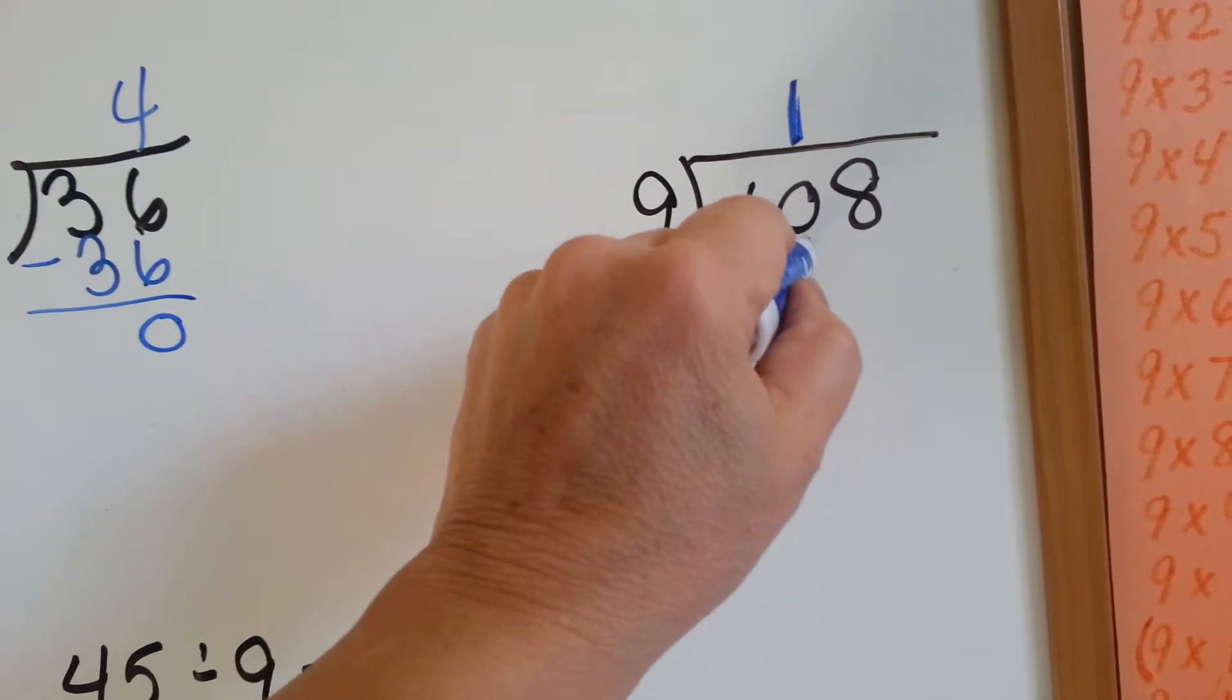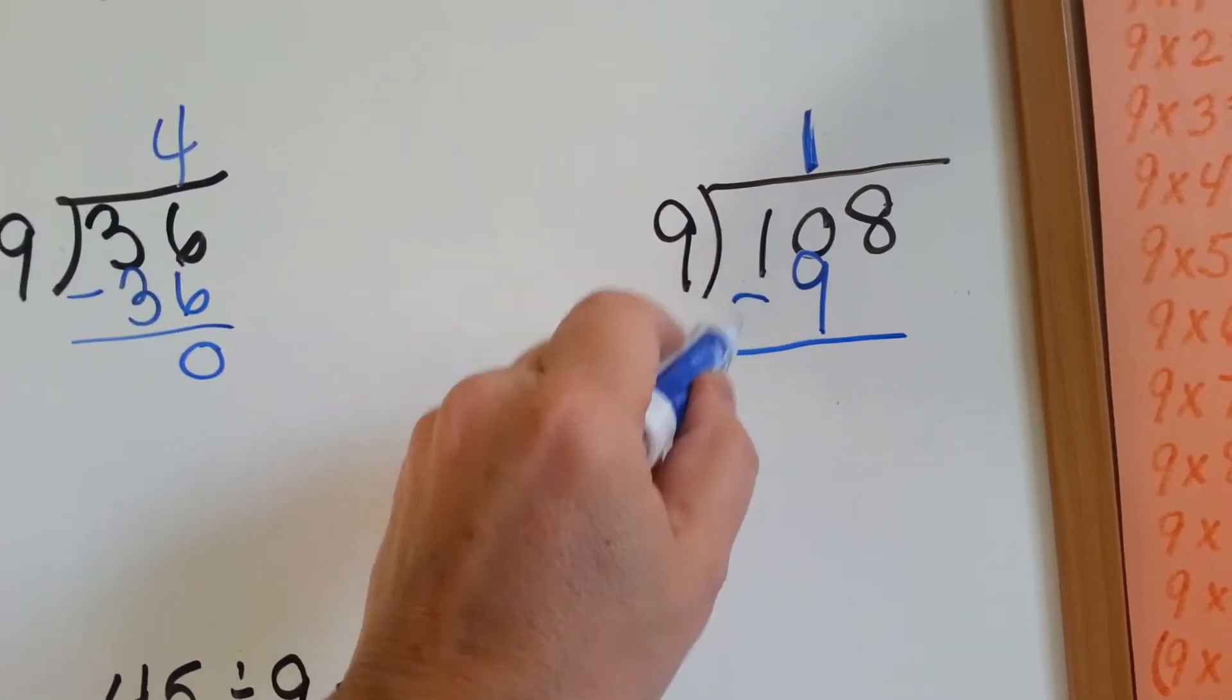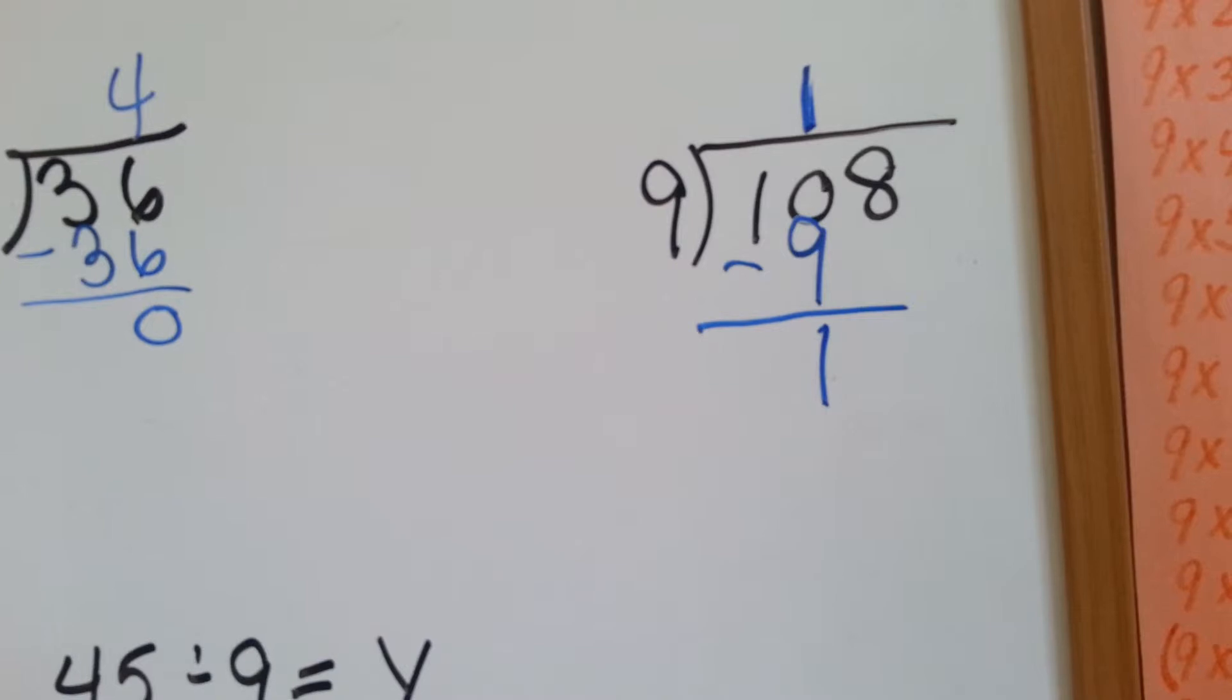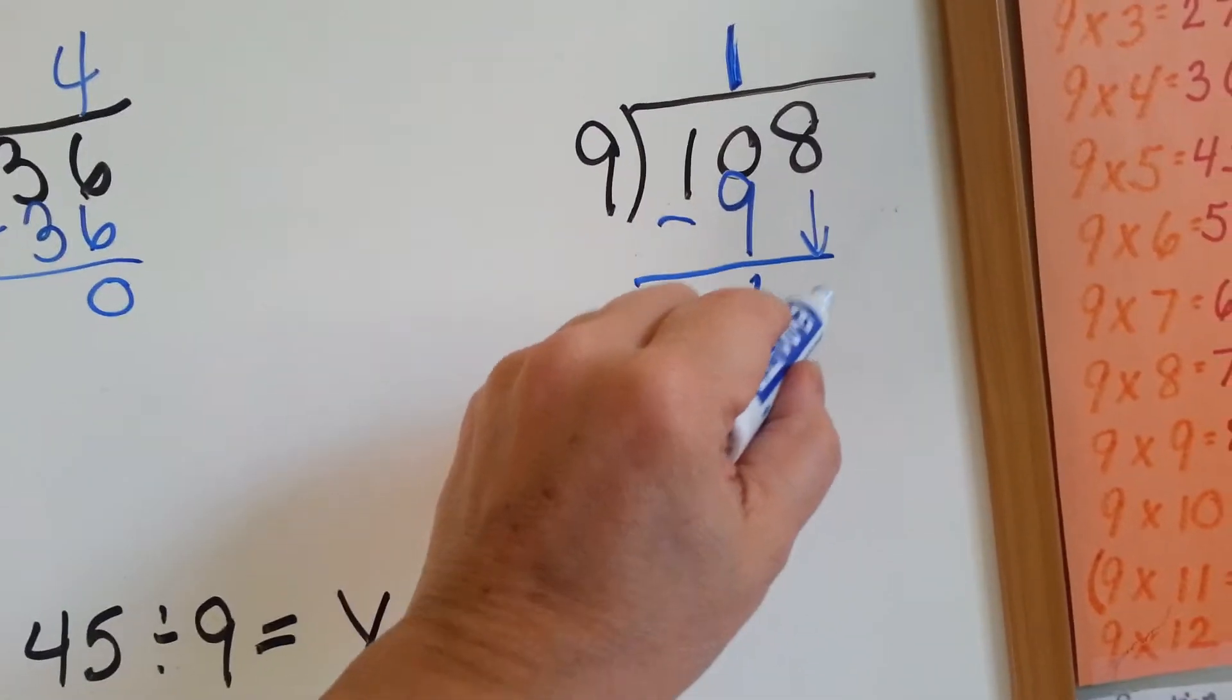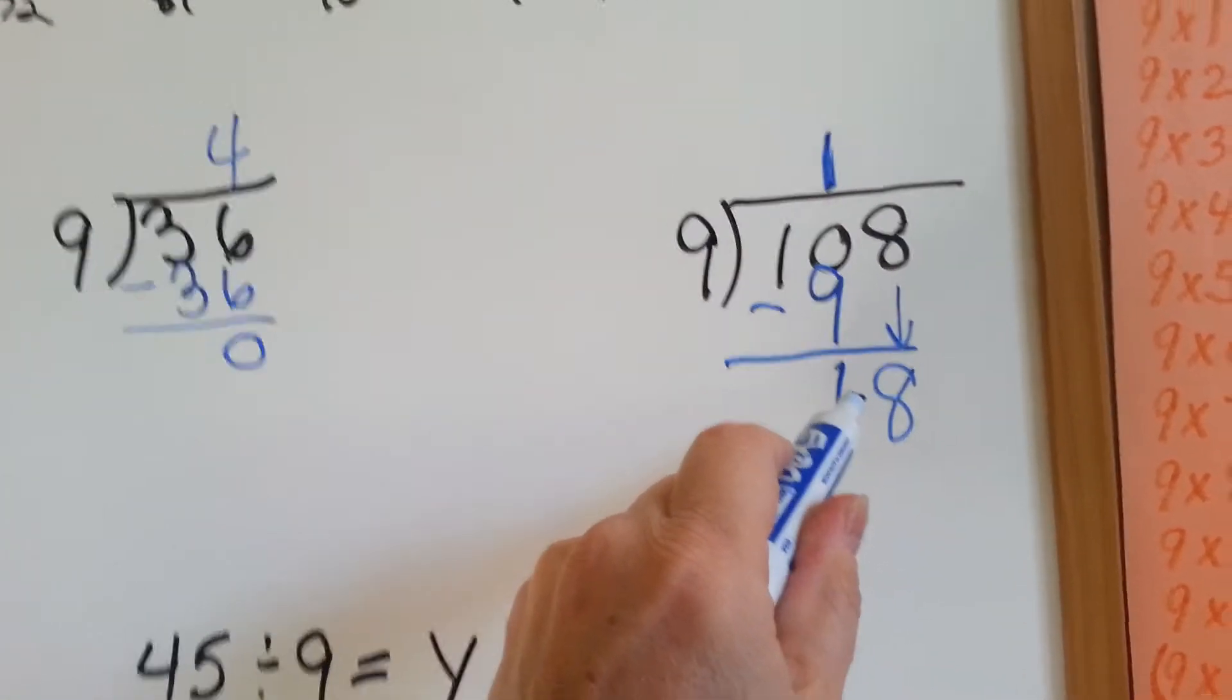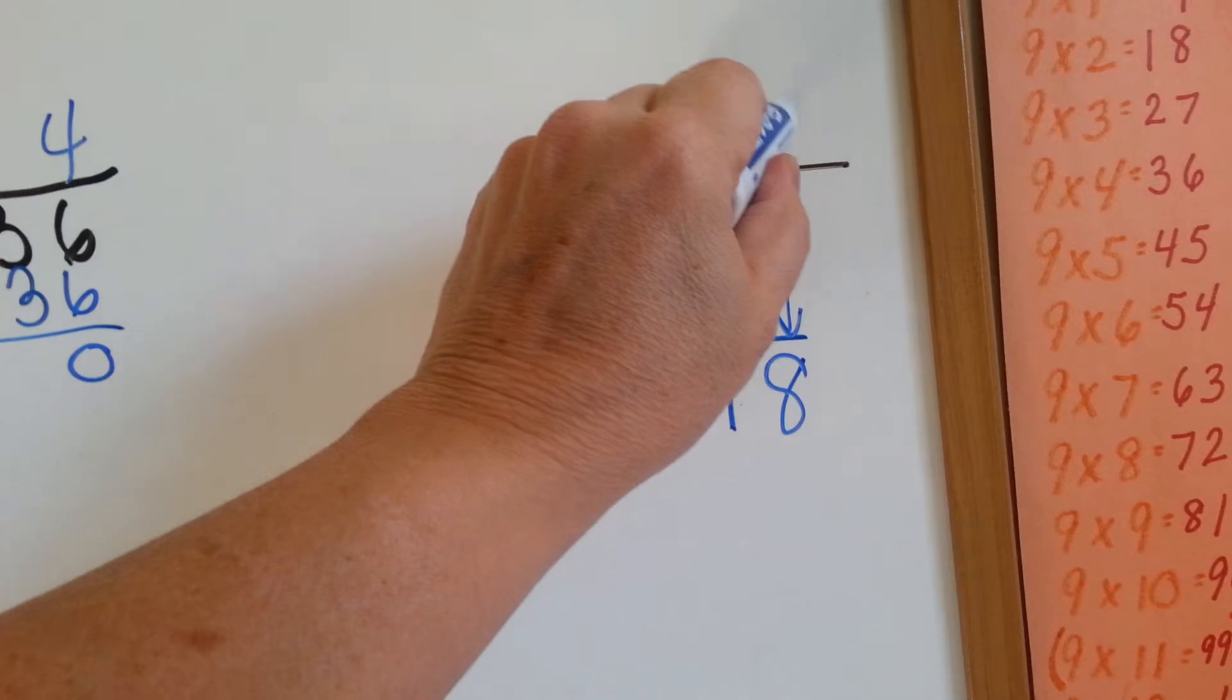9 times 1 is 9 and it goes below the 0 because we line them all up and we do our subtraction. 10 take away 9 is 1. Can 9 go into 1? No. So it's the 8's turn to come down. Put the 8 here. 9 goes into 18 how many times? 2. So we're going to put a 2 above the 8.